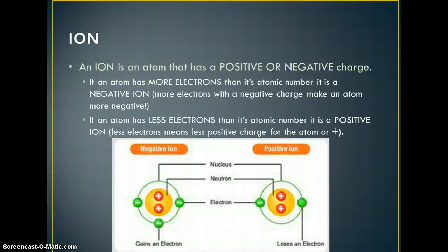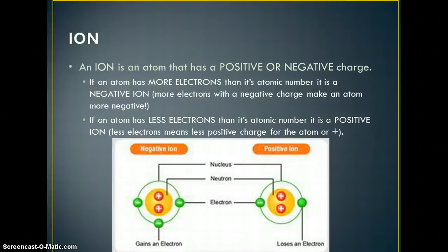An ion is an atom that has a positive or negative charge. Generally, atoms have no charge because they have the same number of protons and electrons. That top number tells you both the number of protons and the number of electrons. But if an atom has more electrons than its atomic number, it becomes a negative ion, because more negative electrons make it more negative overall.